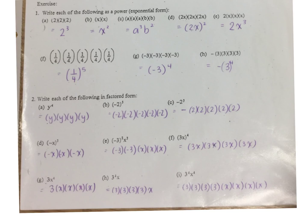A power is made up of a base and an exponent. In this case it would be the number 2, and this would be read as 2 to the power of 3. The base is the number that's being repeated, and the exponent tells you how many times you need to repeat the base. So here I have the number 2 written 3 times — repeated multiplication: 2 times 2 times 2.